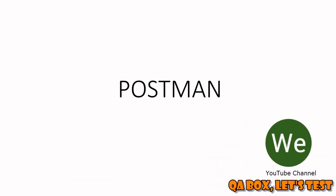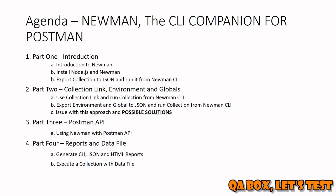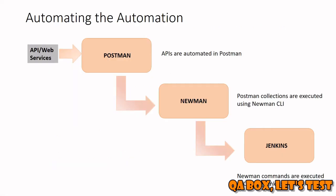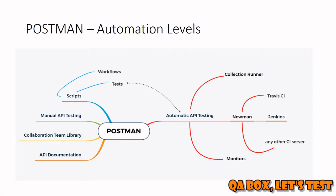In this video we're going to talk about Newman, which is the CLI companion for Postman. We have created collections, inside those collections we have created folders, and inside those folders we have created multiple requests with scripts and tests written on each request. We have seen how to execute requests individually by clicking the send button, and how to run a complete collection using the collection runner.